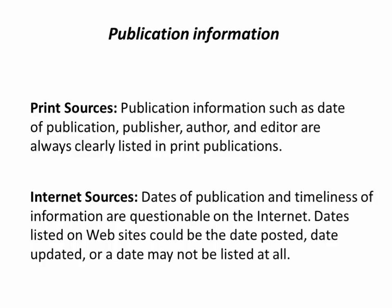Publication information. Publication information such as date of publication, publisher, author, and editor are always clearly listed in print publications. Dates of publication and timeliness of information are questionable on the internet. Dates listed on websites could be the date posted, date updated, or a date may not be listed at all.